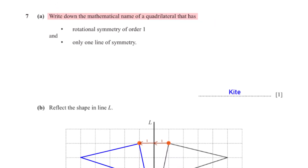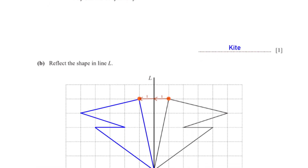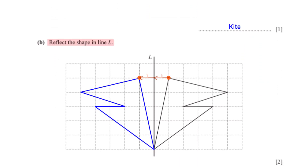Write down the mathematical name of a quadrilateral that has rotational symmetry of order 1 and 1 line of symmetry. The quadrilateral with these properties is a kite.